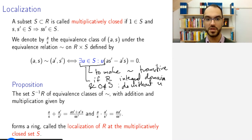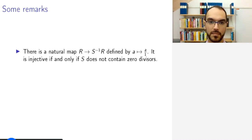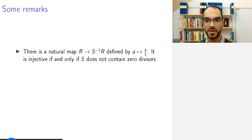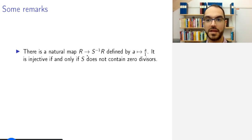At any rate, this general definition gives you a ring. The point is that now elements of S are invertible: if you multiply S divided by 1 by 1 divided by S, you get 1 for all S in S. As with the point of view that any integer is a rational number with denominator 1, there is a natural map from the ring R to the localization with respect to S, mapping an element A to the quotient A divided by 1. But note that this is in general not injective — it is injective if and only if S does not contain zero divisors.